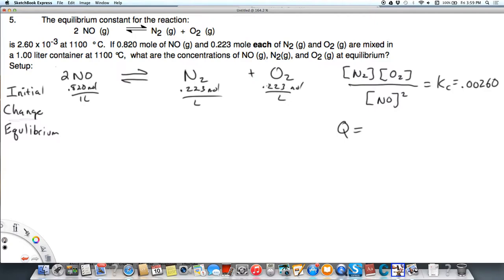So I'm going to go ahead and plug in these values. That's going to be, and I have already made a mistake. Nope, I haven't. So we're going to go ahead and plug in these values. This is going to be 0.223 times 0.223 over 0.820, that quantity squared. And what we end up with is 0.0740, or 7.4 times 10 to the minus 2.